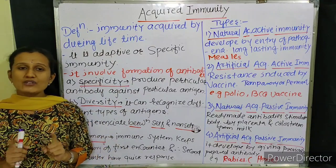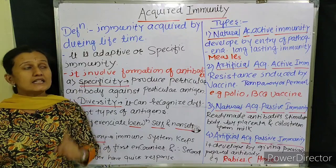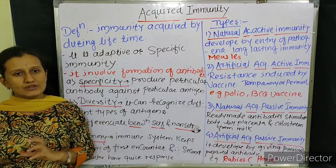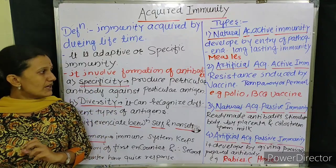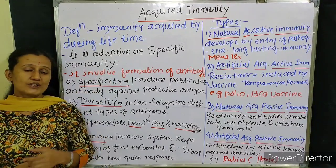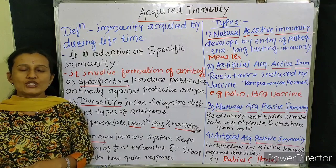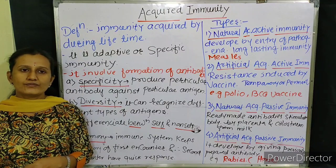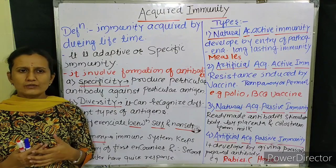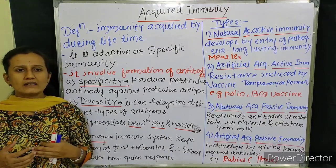This immunity is not present from birth; it is acquired after birth — that is why it is called acquired immunity. The most important point in this acquired immunity is the formation of antibodies. For example, when we go to the doctor and we have some particular disease — we are not feeling well — the doctor examines us.